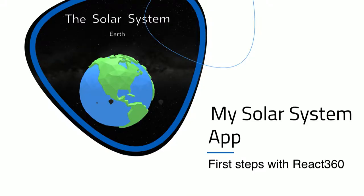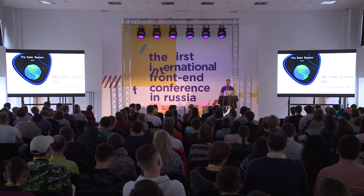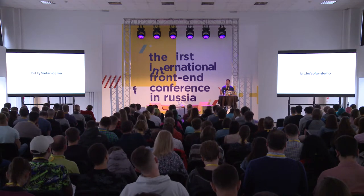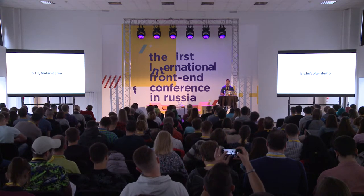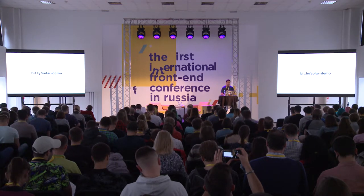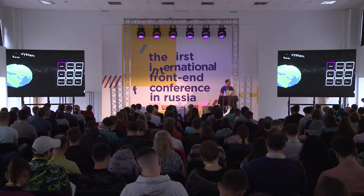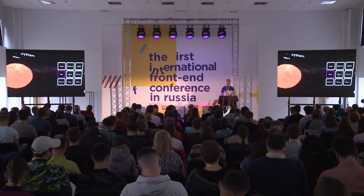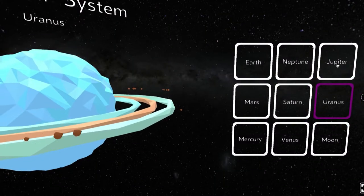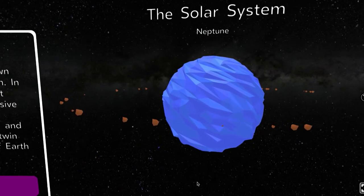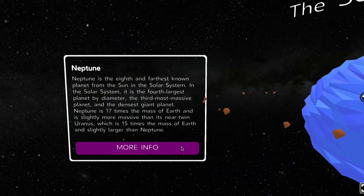Now let's begin building our own application. The app we are going to build together will present our solar system planets. You can use the link on screen — bit.ly/solardemo — to try the demo right now on your mobile phones or laptops, and all of the code is in my GitHub account. The application shows a planet with some text, a menu on the right to change to another planet, and a view component on the left with additional information about the planet.